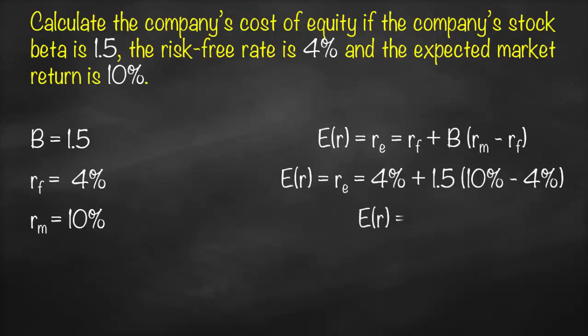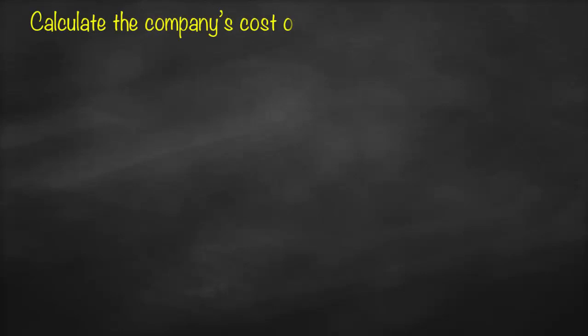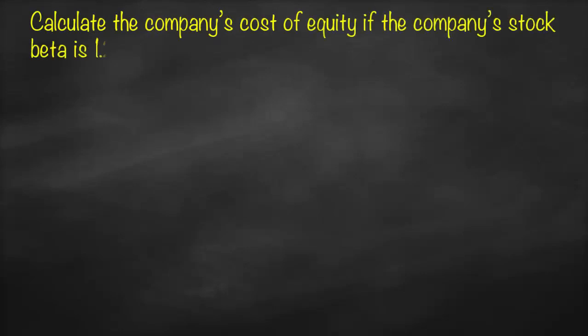Substituting: our expected return or cost of equity equals 4% plus 1.5 (beta) multiplied by open bracket 10% (market return) minus 4% (risk free rate). This gives us our expected return or cost of equity equal to 13%.